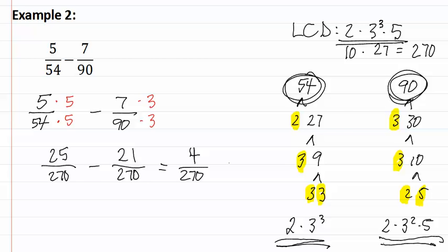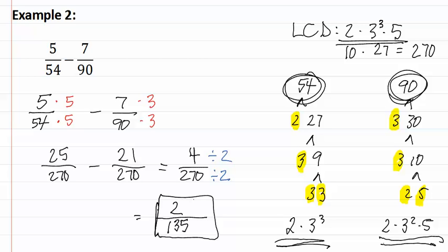Remember, you must always reduce your answers. Since both of these numbers are even, we know they both can divide by two. This gives us two over one hundred thirty-five, which is our final answer. When adding and subtracting fractions, if their denominators do not match, you must find the least common denominator. To find the least common denominator of larger numbers, find the prime factorization of each number and then make the denominators match by multiplying them by their missing factors.